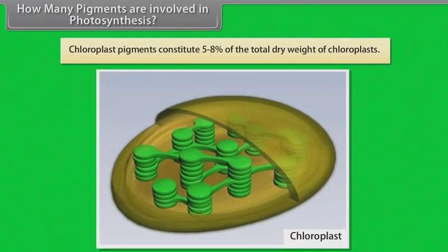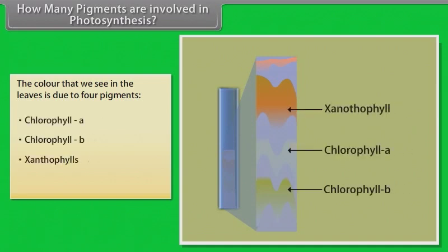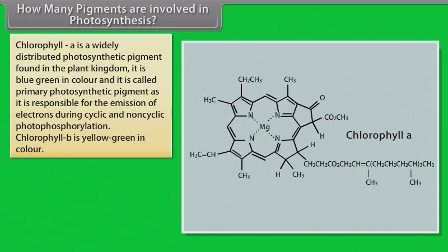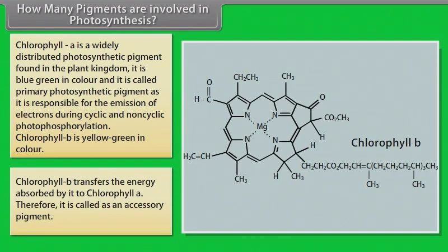Chloroplast pigments constitute 5–8% of the total dry weight of chloroplasts. The color we see in leaves is due to 4 pigments: Chlorophyll A, Chlorophyll B, xanthophylls, and carotenoids. Chlorophyll A is a widely distributed photosynthetic pigment, blue-green in color, and is called the primary photosynthetic pigment as it is responsible for the emission of electrons during cyclic and non-cyclic photophosphorylation. Chlorophyll B is yellow-green in color and transfers energy absorbed by it to Chlorophyll A, so it is called an accessory pigment.